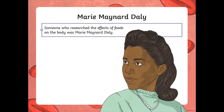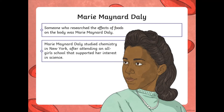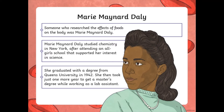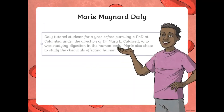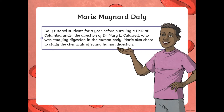We are going to be focusing specifically on Marie Maynard Daly. Someone who researched the effects of foods on the body was this very famous scientist, Marie Maynard Daly. She studied chemistry in New York after attending an all-girls school that supported her interest in science. She graduated with a degree from Queen's University in 1942, then took just one more year to get a master's degree whilst working as a lab assistant. She taught students for a year before pursuing a PhD — remember, that's like the next level after university, like the master's.